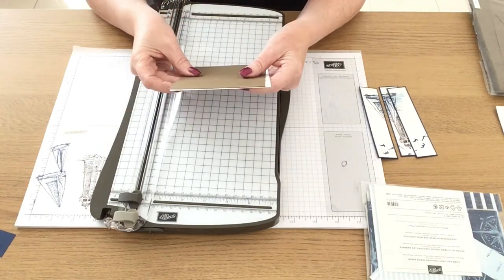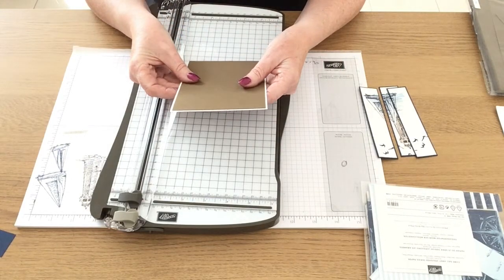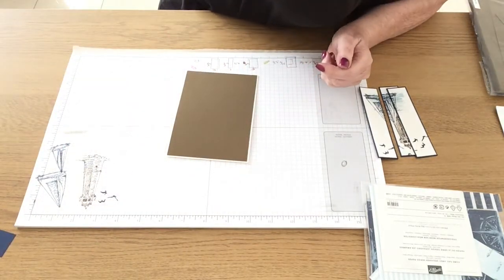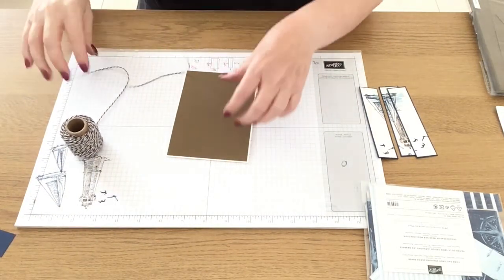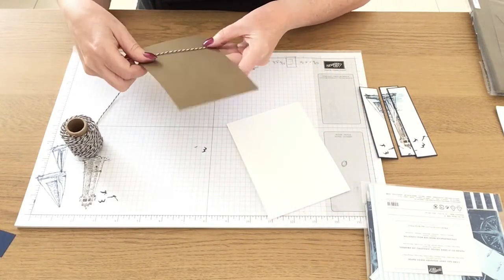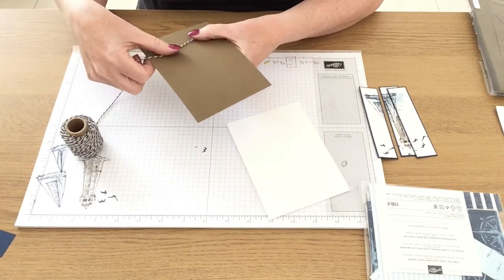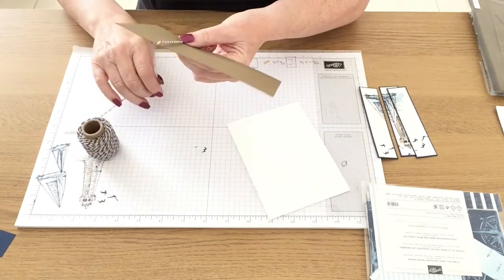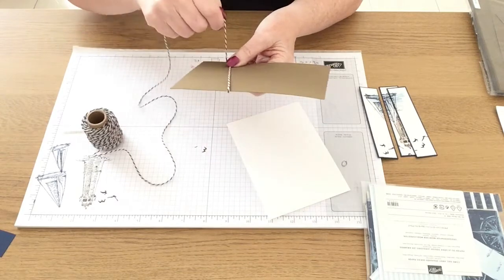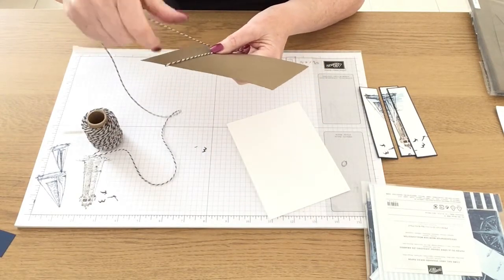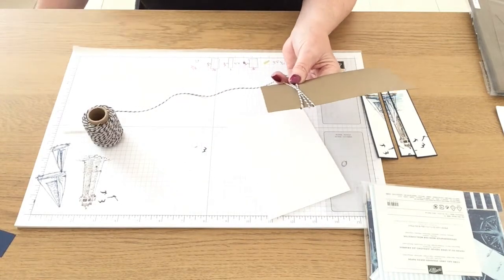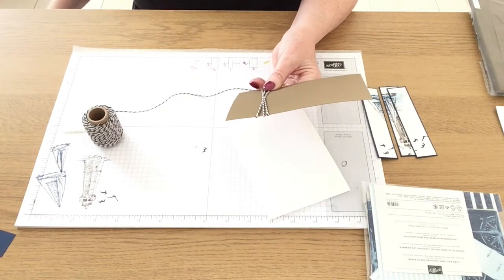Okay so before I stick this soft suede layer onto the front of my white card I think I'm going to use some of the baker's twine that is part of this sailing home suite and this baker's twine is in Night of Navy and very vanilla. I'm just going to unravel some and wrap it around my piece of soft suede card a couple of times and then tie it in a knot or a bow on the front.